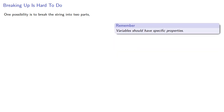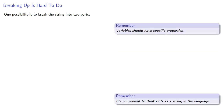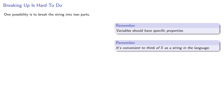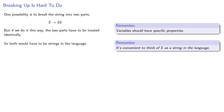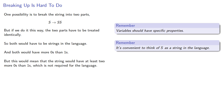One possibility is to break the string into two parts, which requires introducing some variables. Variables should have specific properties, and it's convenient to think of S, our start symbol, as being a string in the language. But if we break the original string into two parts this way, the two parts have to be treated identically — both would have to be strings in the language with more 0s than 1s. This would mean the original string would need at least two more 0s than 1s, which is not actually required in our language.